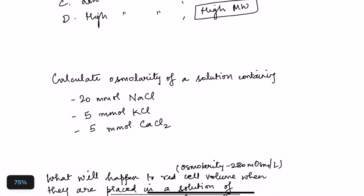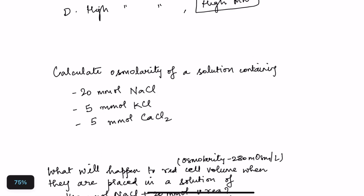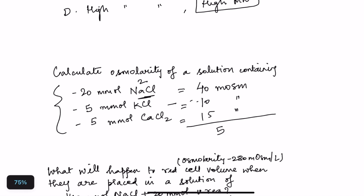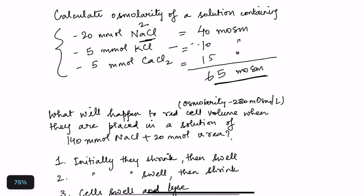MCQ 2: Calculate osmolarity of a solution containing 20 millimoles NaCl, 5 millimoles KCl, and 5 millimoles CaCl₂. NaCl releases 2 particles: 20 × 2 = 40 milliosmoles. KCl releases 2 particles: 5 × 2 = 10 milliosmoles. CaCl₂ releases 3 particles: 5 × 3 = 15 milliosmoles. Total: 40 + 10 + 15 = 65 milliosmoles.